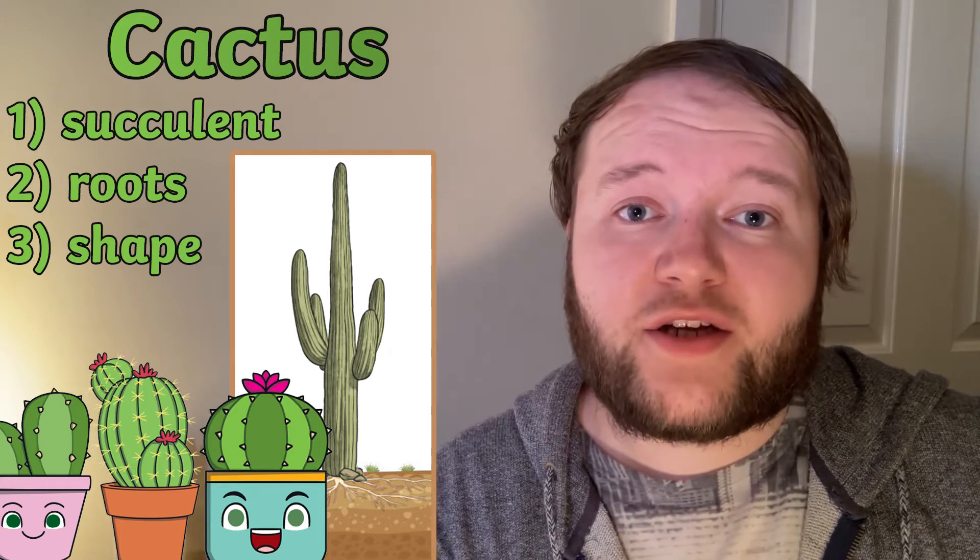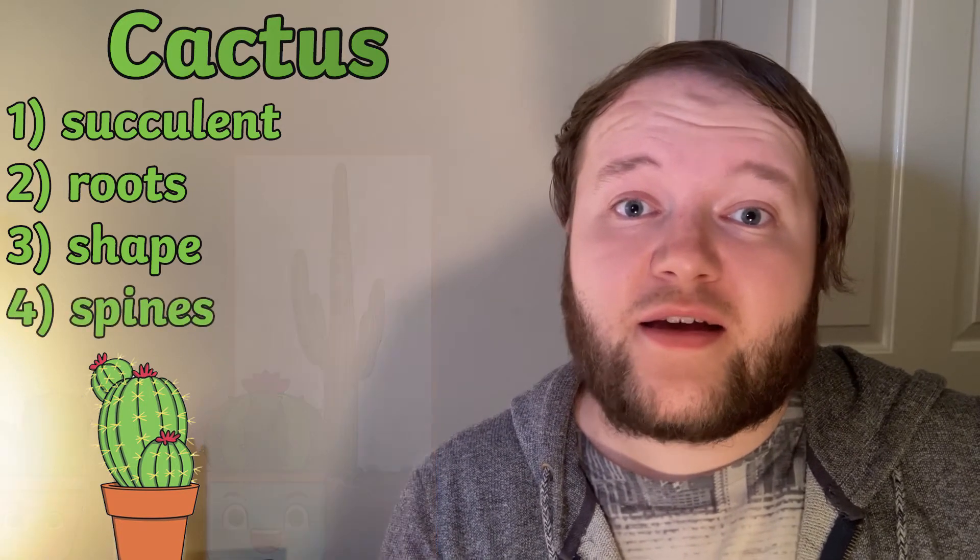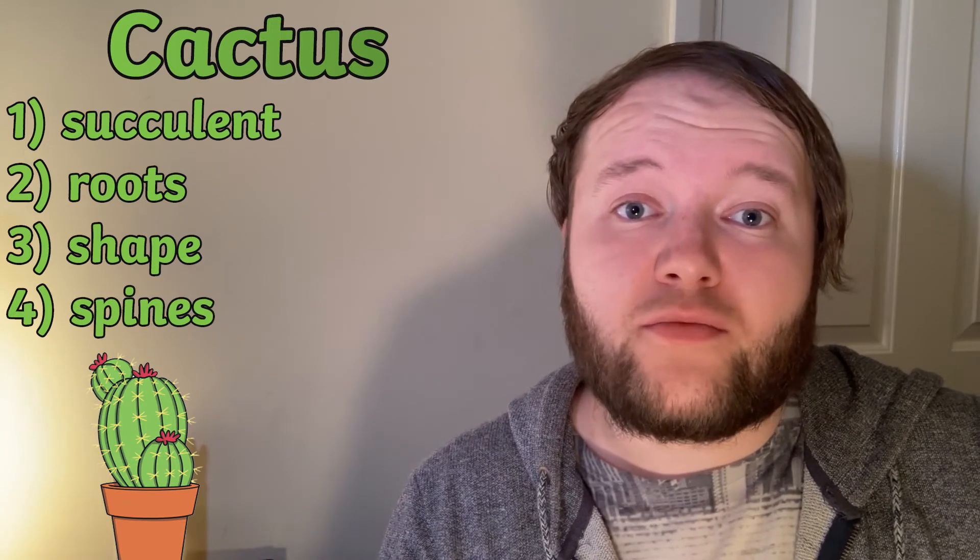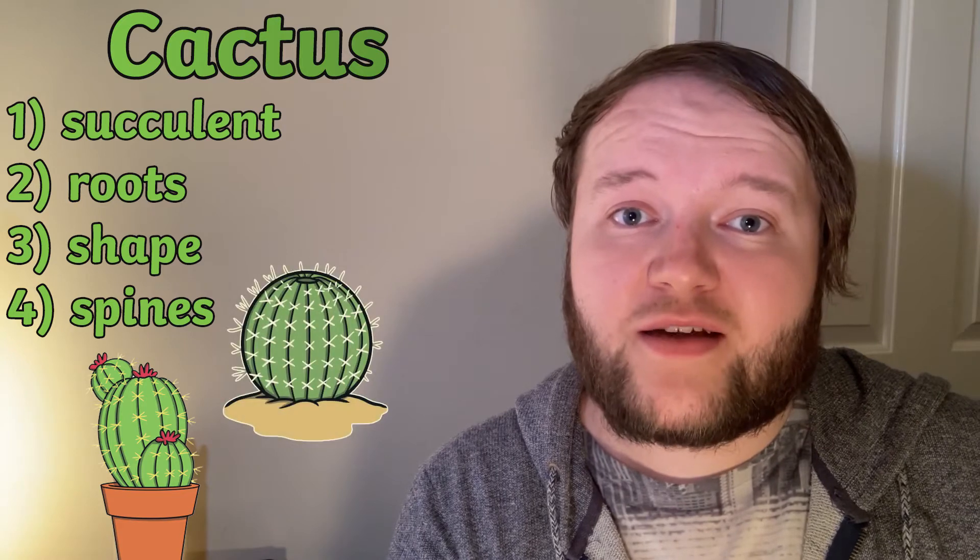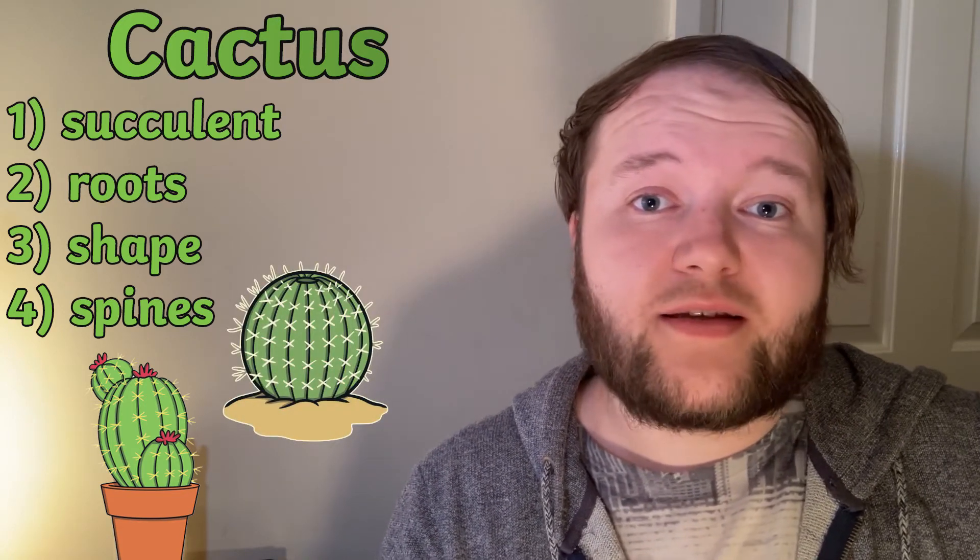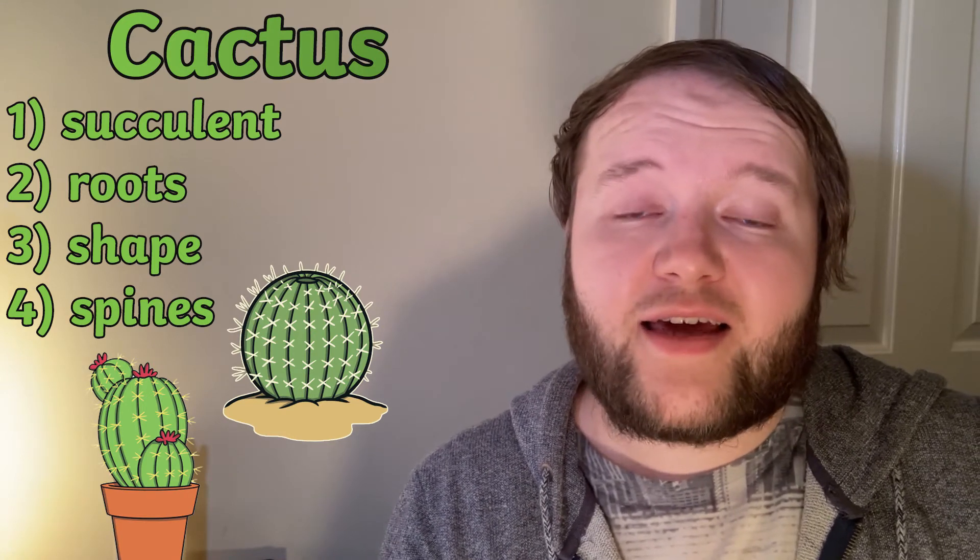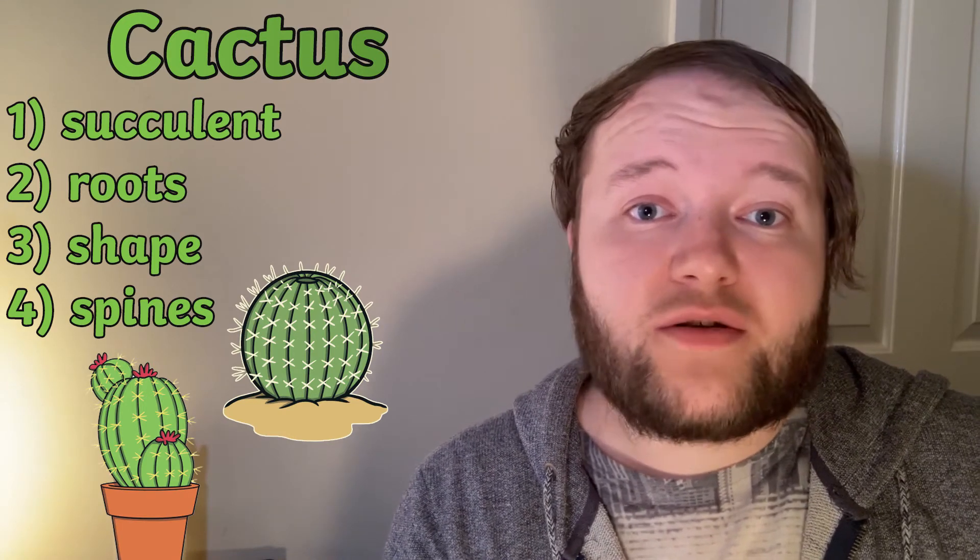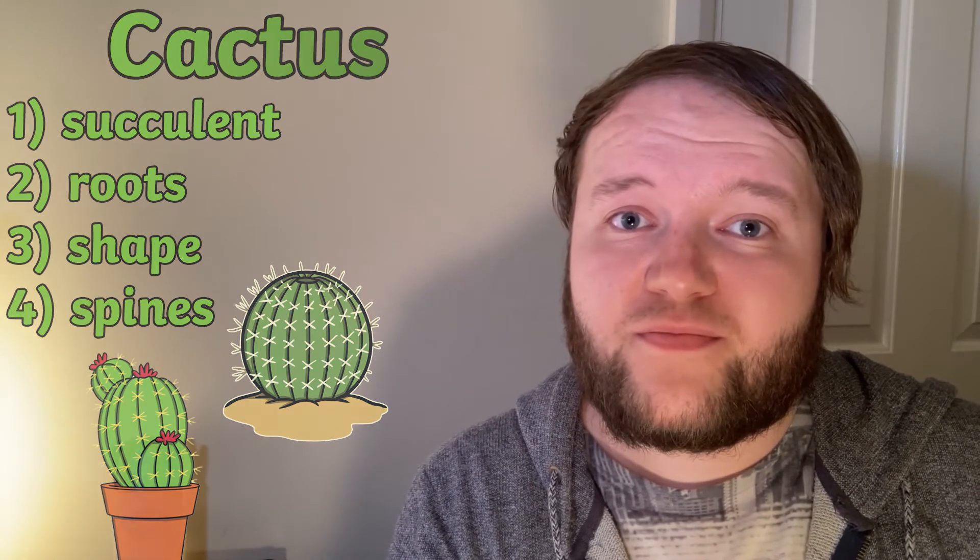The fourth and final adaptation, and what cacti are best known for, is their spines. These actually have two main benefits. Of course, the sharp needle-like spines protect the plant from animals looking to feed on it, but these spines also absorb and reflect sunlight, again keeping the cactus cool, reducing the amount of water that might be lost through evaporation.